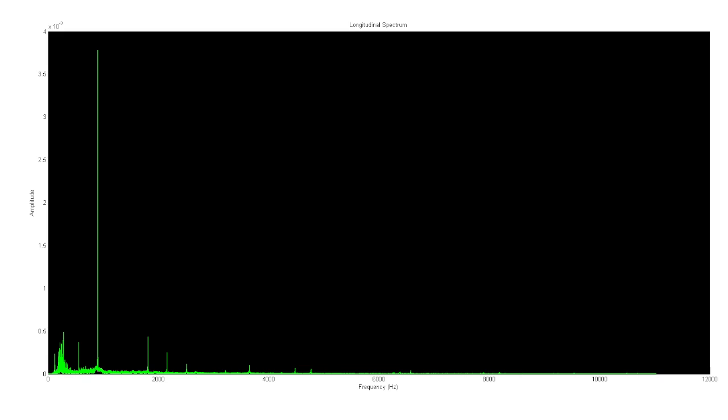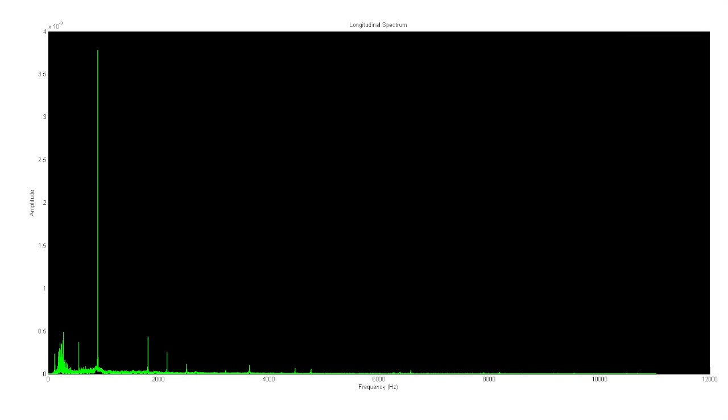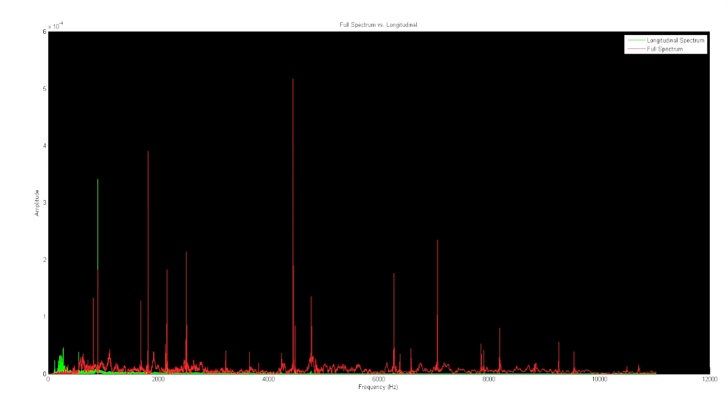It isn't until we overlay the full spectrum of a regular triangle hit that we see where the peak frequency fits into the full sound. The fact that the frequency has a much taller peak when isolated as compared to the full spectrum indicates that this frequency is indeed the major longitudinal vibration of the triangle.